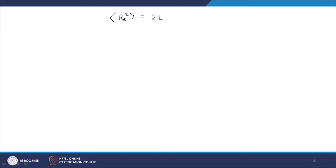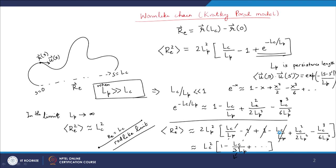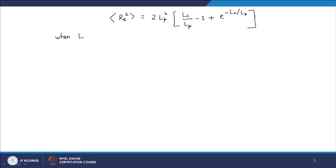Now look at the opposite extreme when LP is very small. Reproducing the formula: the mean square end-to-end distance is 2LP²[(LC/LP) − 1 + e^(−LC/LP)]. When LP is much less than LC, then LC/LP is much greater than 1.